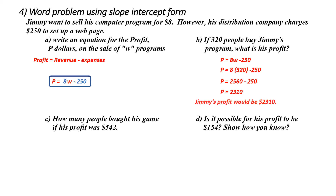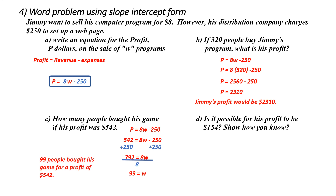This is a word problem, so it requires a word answer. Part C: how many people bought his game if his profit was $542? I start with the equation and replace p with 542. I want to get w alone, so I add 250 to both sides to get rid of negative 250, giving me 792 equals 8w. I divide both sides by 8, giving me w equals 99. So 99 people bought his game for a profit of $542.